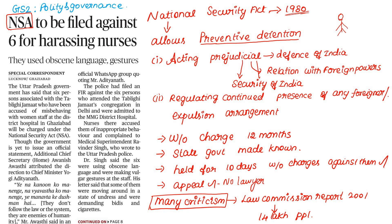Under preventive detention, if there is evidence that someone is about to commit an act harmful to the state, they can be detained without being charged. This is the concept of Preventive Detention under the NSA.